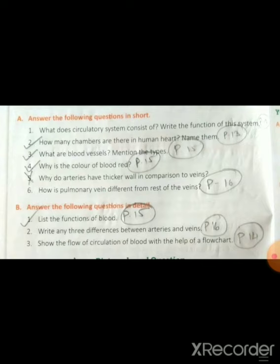Chapter 1, this is your last chapter. First question: How many chambers are there in a human heart? Name them. What are blood vessels? Why is the color of blood red? This is your last chapter, Revision 6.